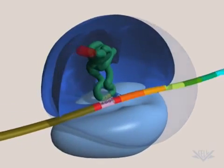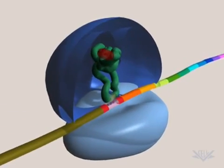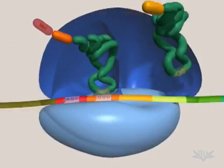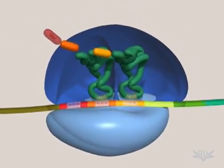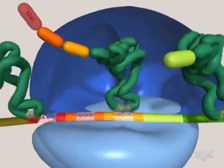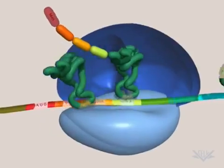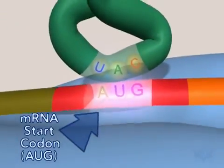As translation starts, a tRNA molecule binds to it and delivers the correct amino acid. As the protein grows, additional amino acids are brought into place by the correct tRNA molecules. The correct tRNA is determined by triplet codes found in the mRNA.